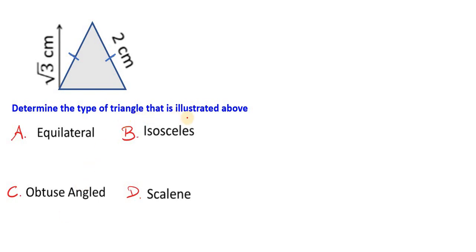Determine the type of triangle that is illustrated above. Here we have a triangle and what we can see is that two sides are of the same length based on the fact that we have a stroke on this side and a stroke on this side as well.